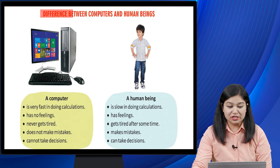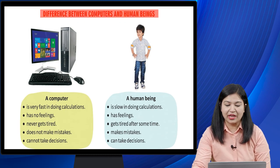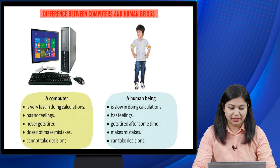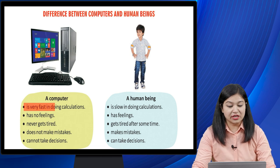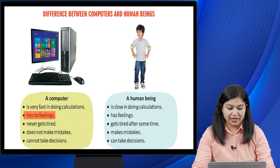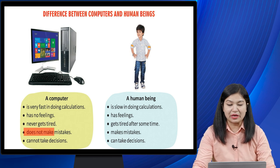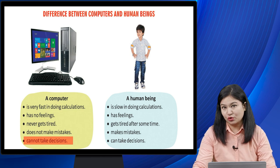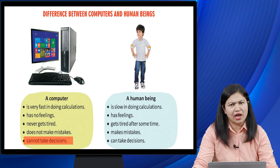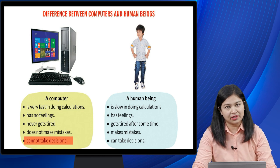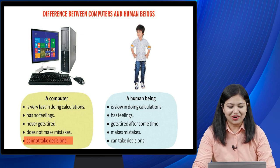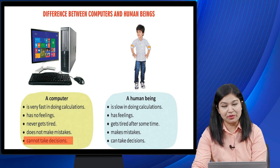Difference between computers and human beings: a computer is very fast in doing calculations, has no feelings, never gets tired, does not make mistakes, and cannot take decisions. Computer fast calculation karta hai, uski koi feelings nahi hoti kyunki woh ek machine hai, woh kabhi tired nahi hota, kabhi mistakes nahi karta, aur khud se koi decision nahi le paata.